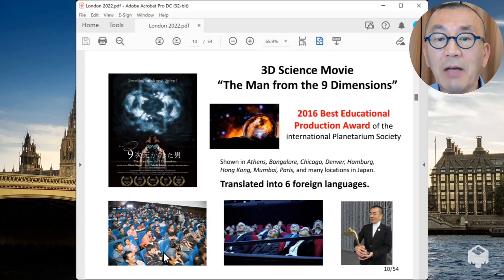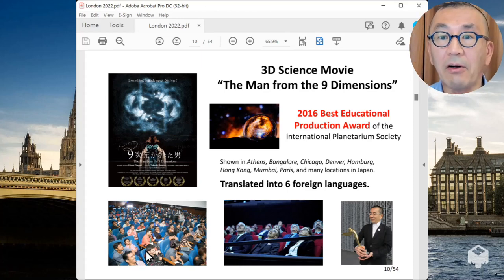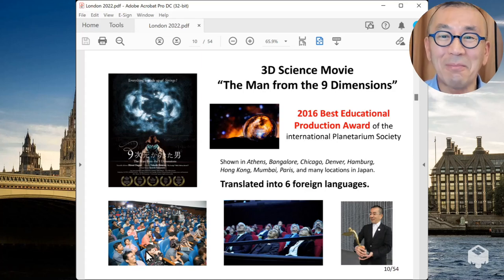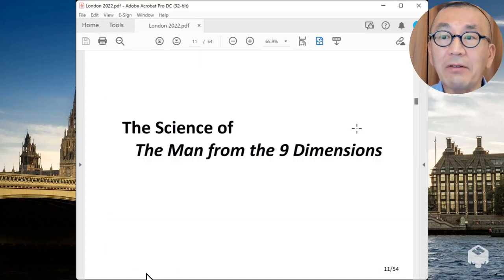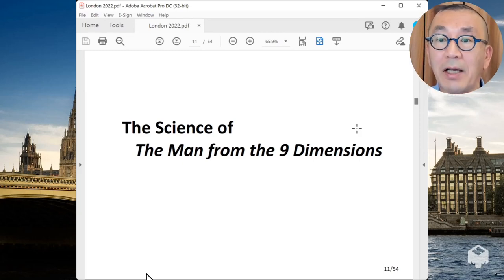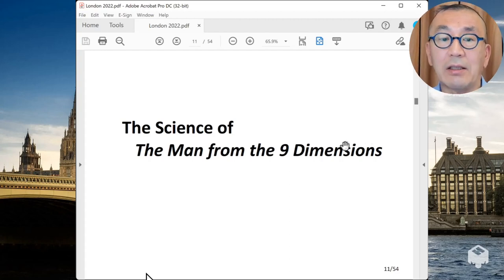And it has been translated into six foreign languages and have shown all over the world. This is when I showed the German version at Hamburg Planetarium. Here is me, sitting next to me is the Education Minister of the State of Hamburg. And this, I believe, is taken at Bangalore in India. I showed this movie together with my public lecture, both in Bangalore and Mumbai. The movie actually made the Hollywood debut. Now I'd like to explain the science behind this movie, so that when you see this movie after my lecture, you can understand what's the science behind this movie.